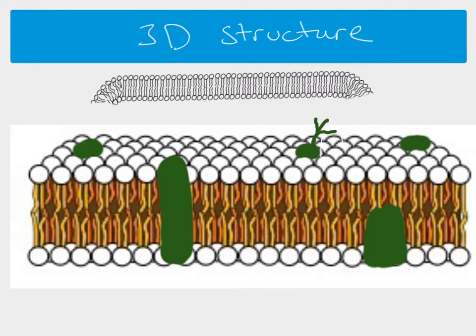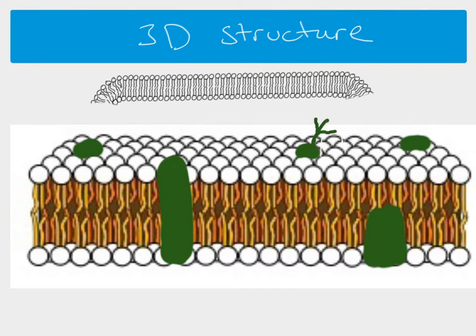In this 3D structure you can obviously see we've got our phospholipids — the top layer and the bottom layer. These green bits here represent proteins which are embedded in the membrane. These could be transport proteins but they could have other functions as well. Sometimes they have carbohydrate parts, so this is a glycoprotein — the protein part here and then the carbohydrate part sticking out, maybe for cell recognition. It's important to remember that this is a 3D structure.